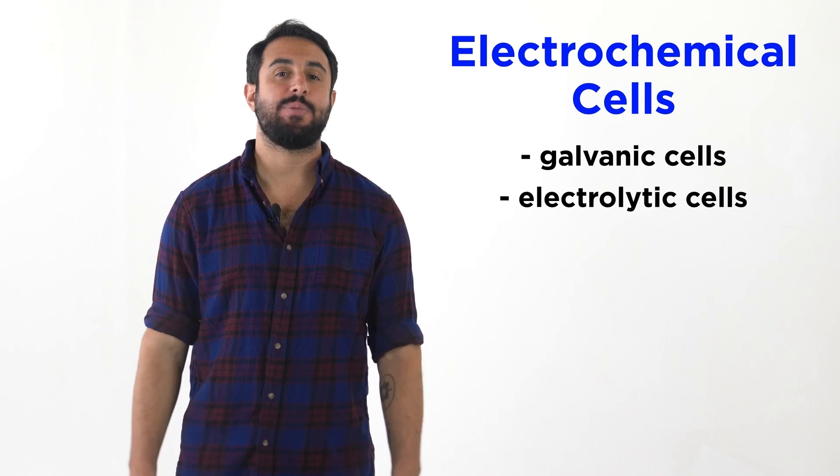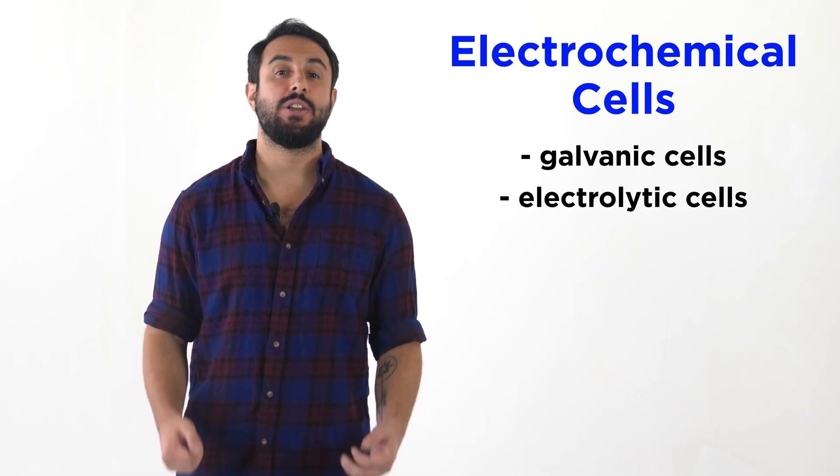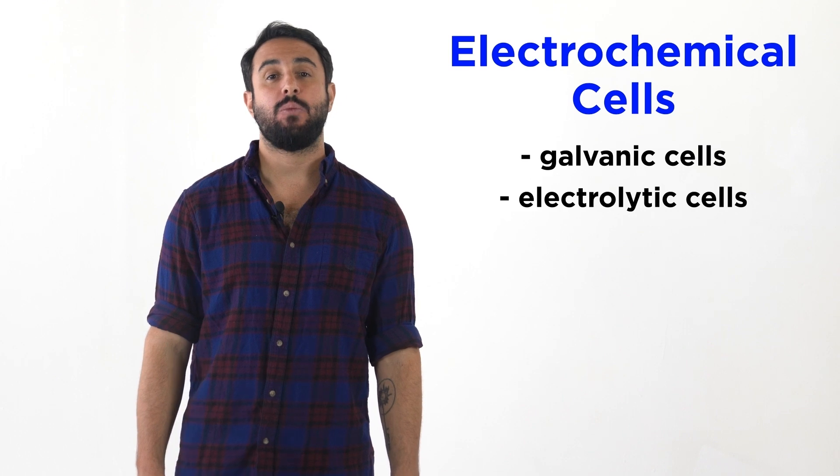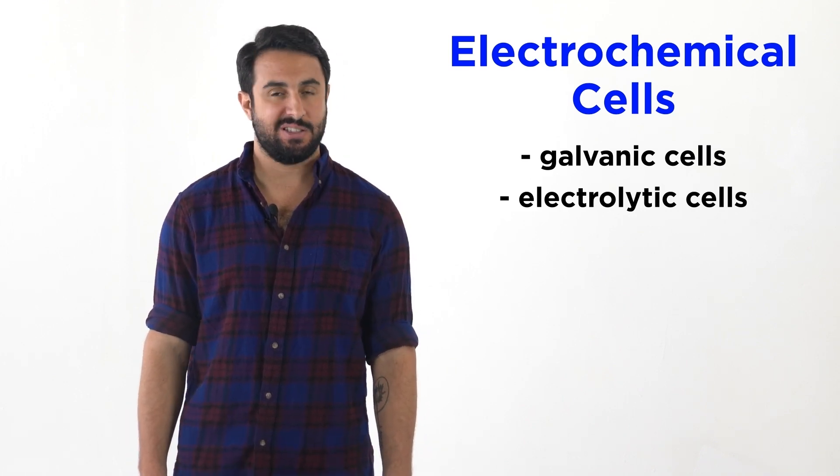So we now know about different types of electrochemical cells, those being galvanic cells and electrolytic cells. And with that, we wrap up our introduction to electrochemistry. Professor Dave for Chegg, see you next time.